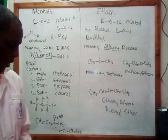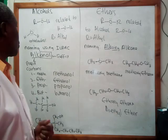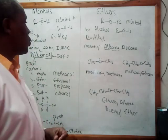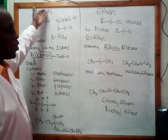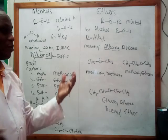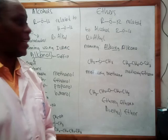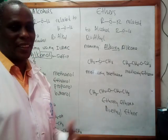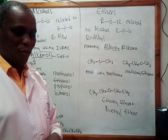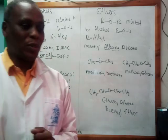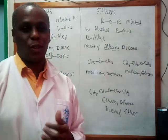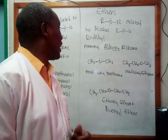Welcome to this continuing session on nomenclature of organic compounds for engineering students. Today we're going to be looking at two functional groups: alcohols and ethers. You've heard about alcohols — the famous one called ethanol and the one responsible for making people who take contaminated alcohol blind or dying, called methanol.